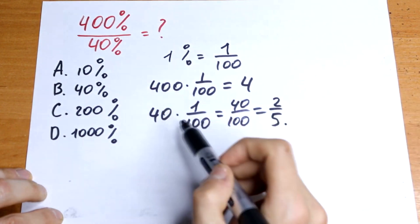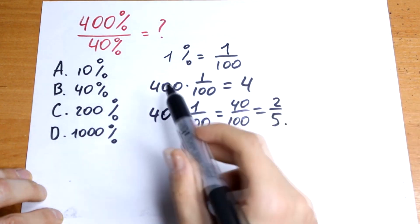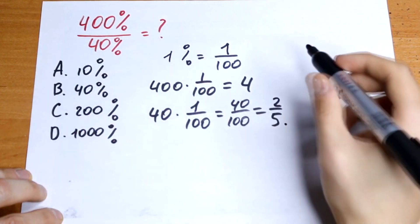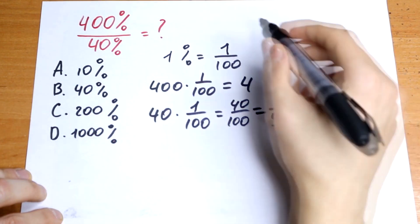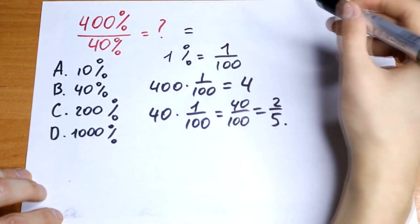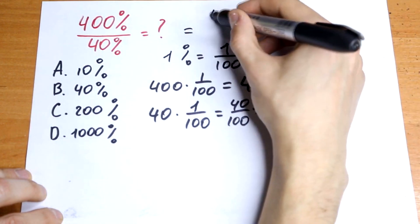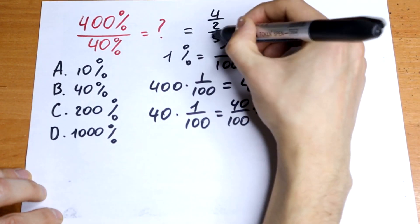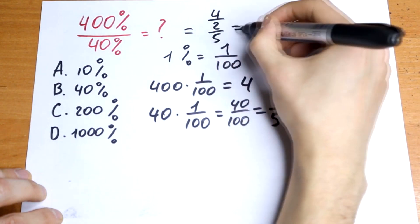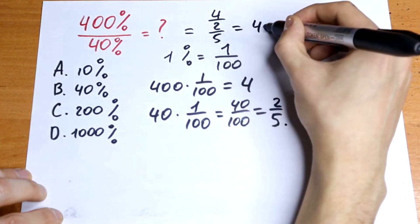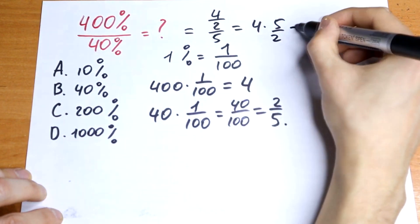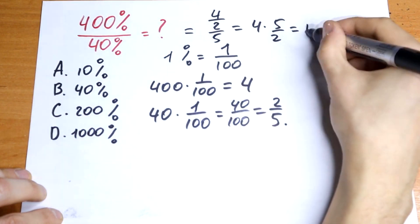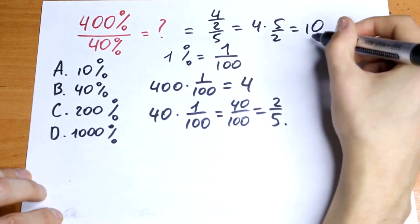This is our denominator, and we should divide it. As a result, we will have 4 over 2/5. We will have 4 times 5 over 2, which gives us 20 over 2, which equals 10.